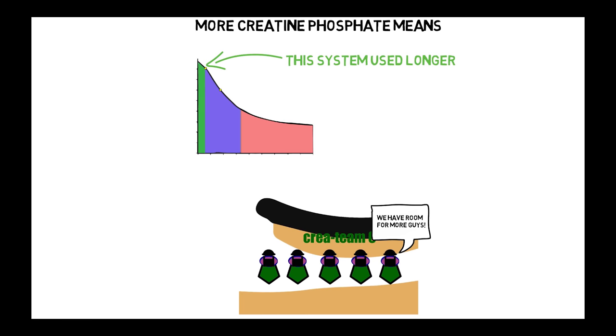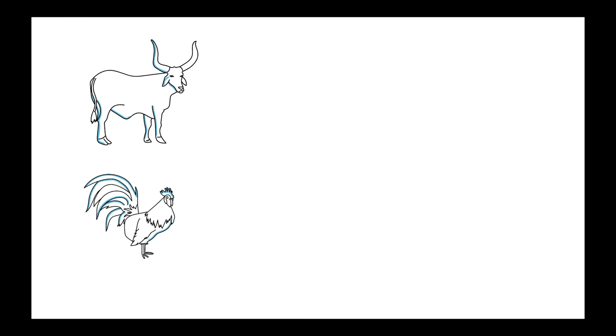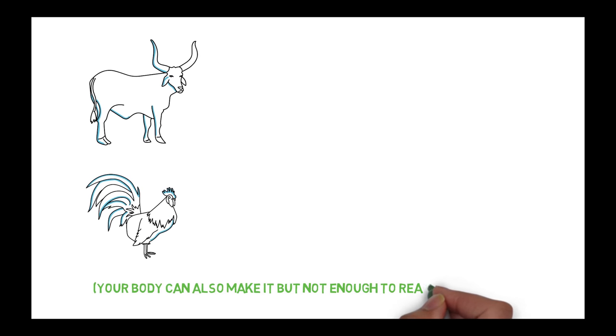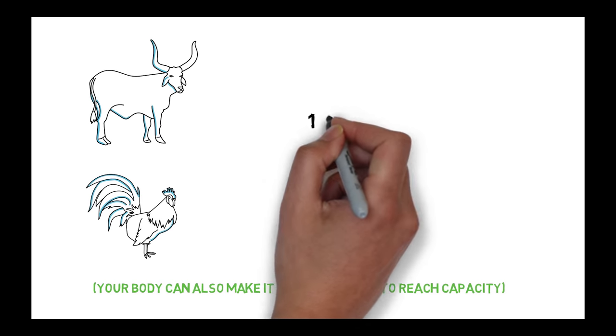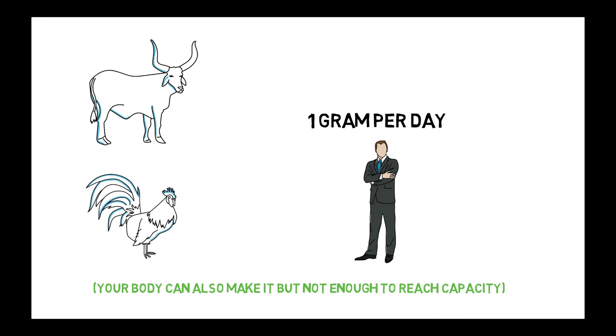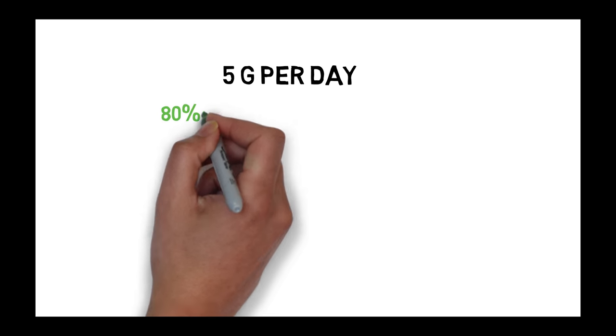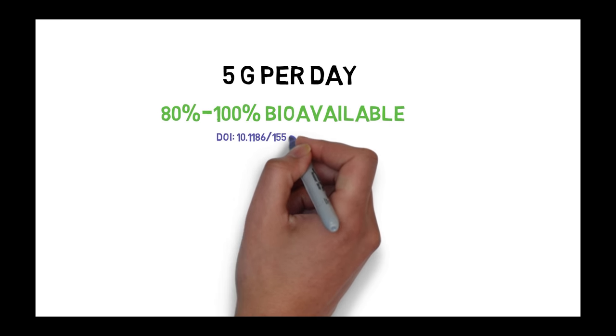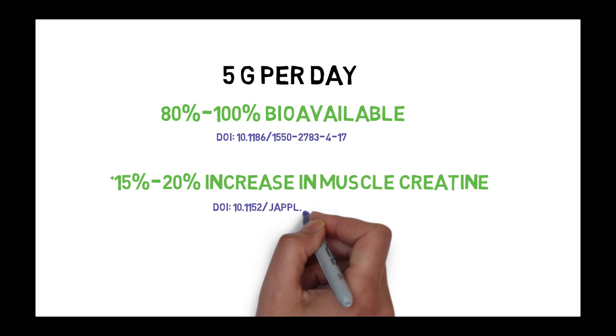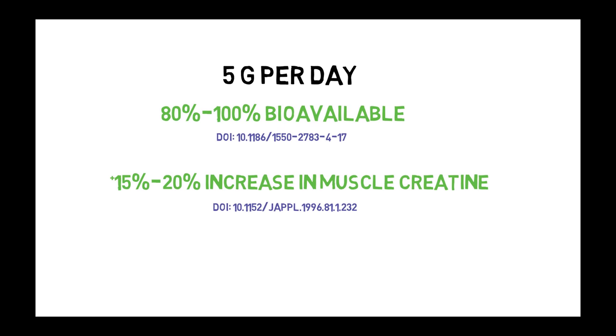Now, the foods you eat do contain some creatine, with the highest amounts in foods such as beef and chicken. But according to a survey, the average 19- to 39-year-old male gets just 1 gram in a day, with women getting even less. This is why if you consume 5 grams of creatine supplement, the recommended amount, it's been shown to be 80-100% bioavailable, and translates into a 15-20% increase in creatine phosphate stores in your muscles.